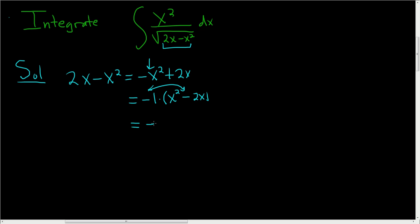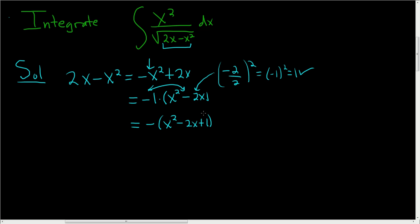So this is equal to negative parentheses x squared minus 2x plus 1. How do you get the plus 1? You take the coefficient of x, which is negative 2, divide it by 2, and square it — so you get negative 1 squared, which is 1. You can't just put a 1 inside; we really put a negative 1 there. So we add a 1 to compensate, and this ends up being 1 minus (x squared minus 2x plus 1).